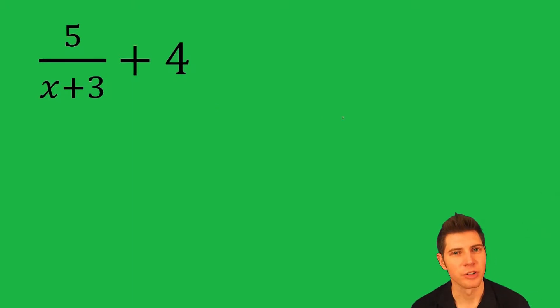Right now it's two terms, we want to make it one term, so we're going to give them a common denominator. This is 4 over 1, x+3 is the common denominator, so we're going to multiply top and bottom by x+3.